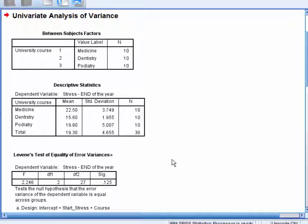Below this, we have Levine's Test of Equality of Error Variances. This is used for testing the assumption of homogeneity of variance. As this is not significant, we can see that this assumption has been met.